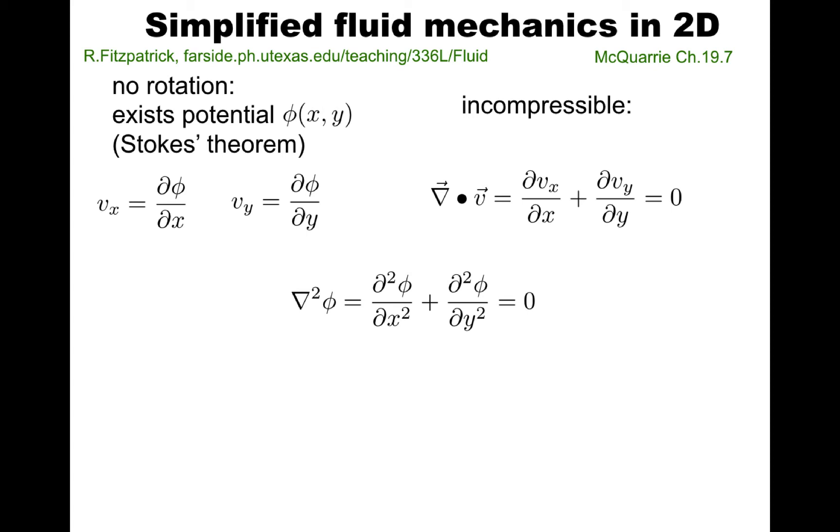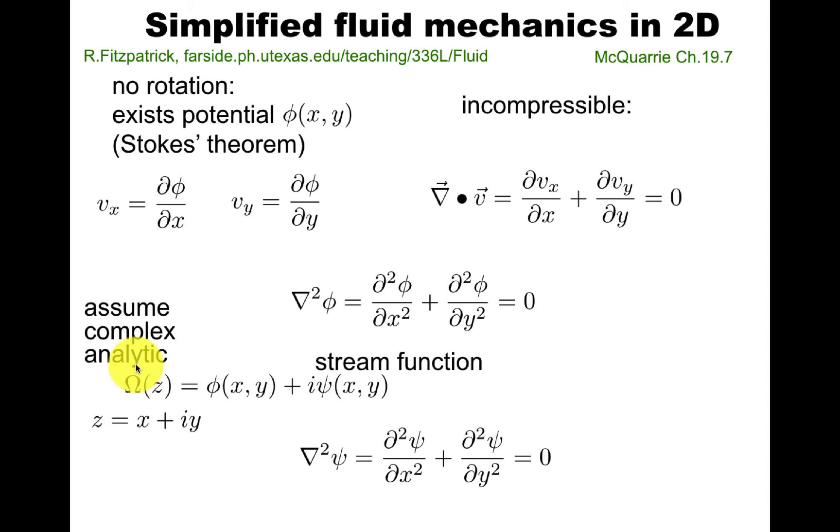Form a function that McQuarrie calls capital Ω, which is the combination of this velocity potential with an imaginary part called the stream function. If Ω(z) is analytic in z, meaning it doesn't have any z-bar, then the stream function, the imaginary part of this complex capital Ω, also satisfies the Laplace equation.